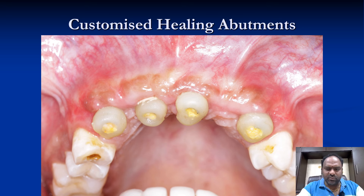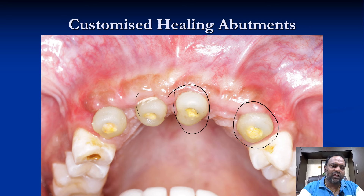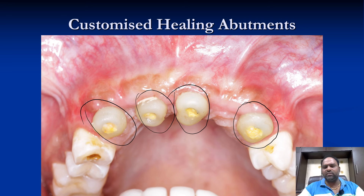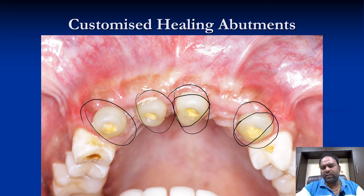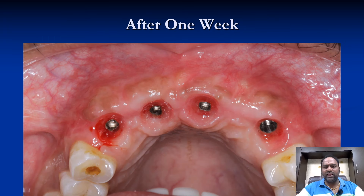What I am doing nowadays is following customized healing abutments: using composite, I prepare the emergence profile on the abutments for each tooth. For a central incisor we prepare a central incisor profile, and for the canine we prepare a canine profile, such that these teeth look quite natural when the crowns are given.